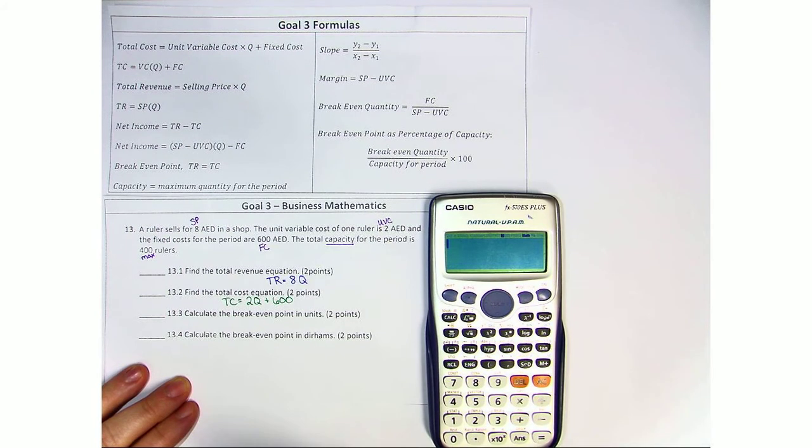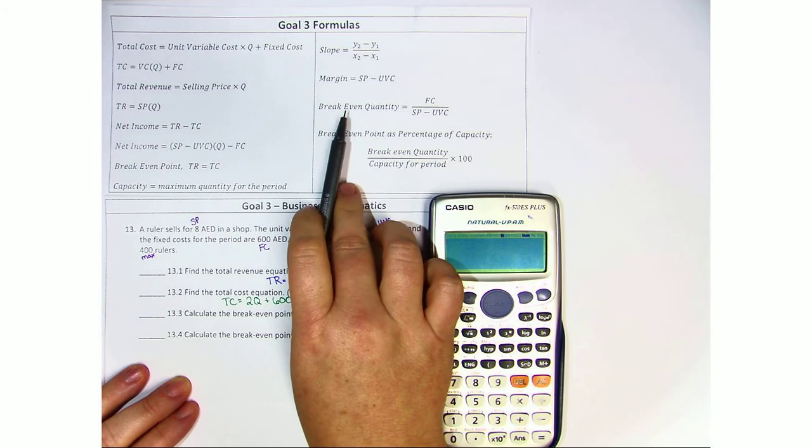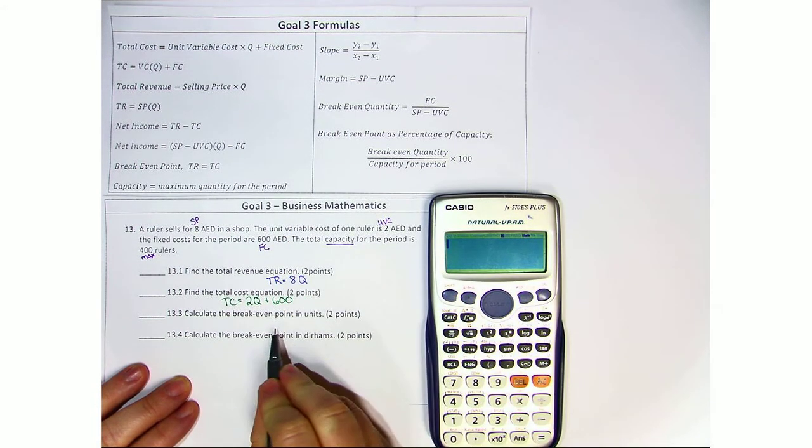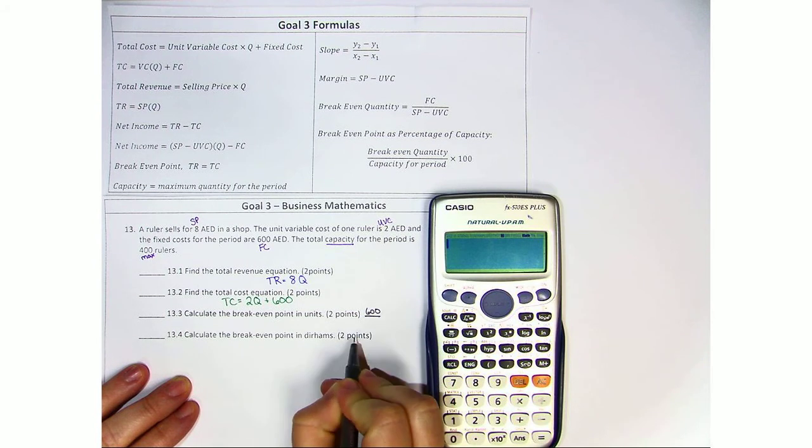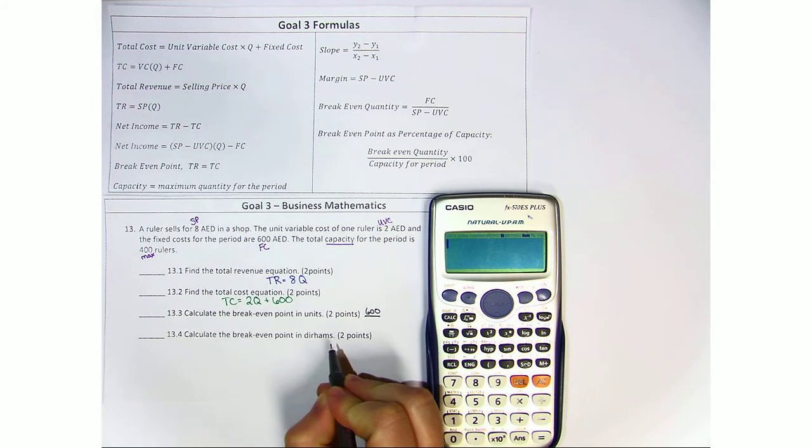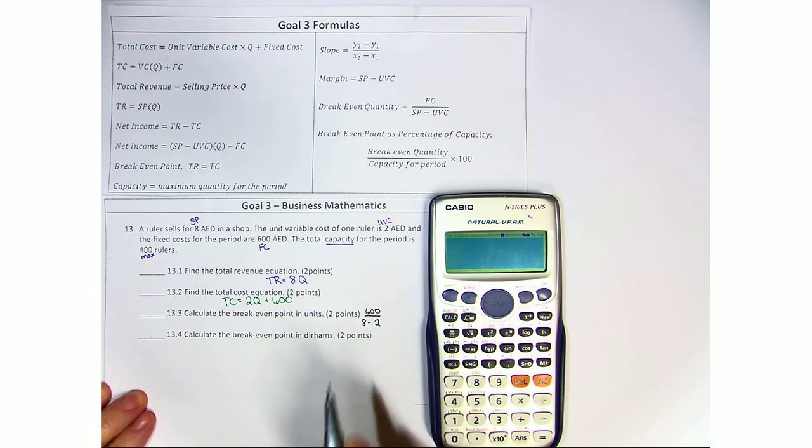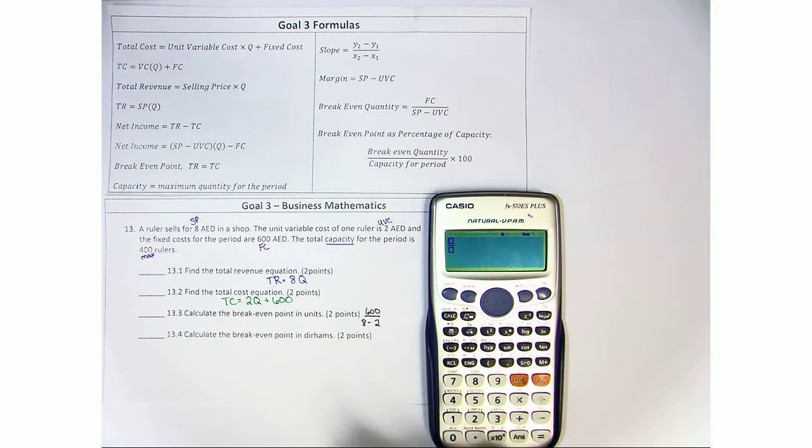The third question says, calculate the break-even point in units. So we're going to actually come here to the unit contribution margin and do the break-even in quantity. The break-even in quantity is the fixed cost, so that's 600, divided by the selling price minus the unit variable cost. The selling price is 8, and the unit variable cost is 2. So we're going to take our calculator and set up the equation exactly as we see it.